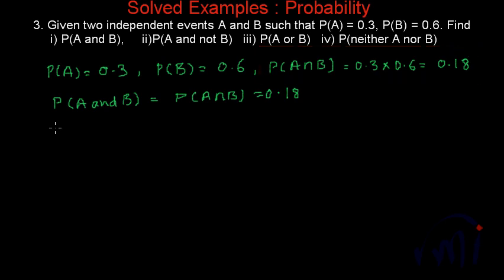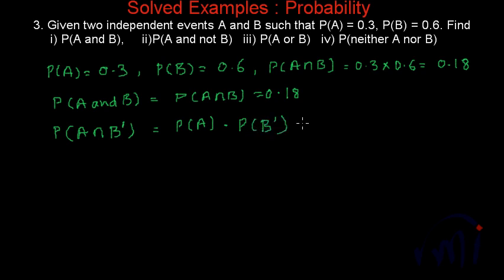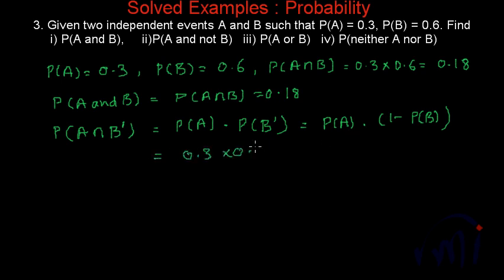Next, the probability of A and not B equals P(A) multiplied by P(B-dash), which equals P(A) multiplied by one minus P(B). One minus P(B) equals one minus 0.6, which is 0.4. So P(A and not B) equals 0.3 times 0.4, which is 0.12.